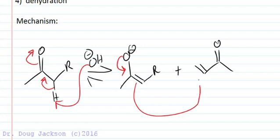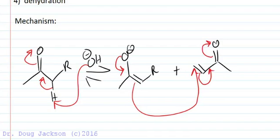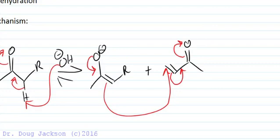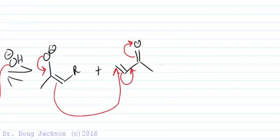Enolate comes back down, attacks the four position, pi bond moves over and forms a new enolate from the alpha beta unsaturated ketone here.